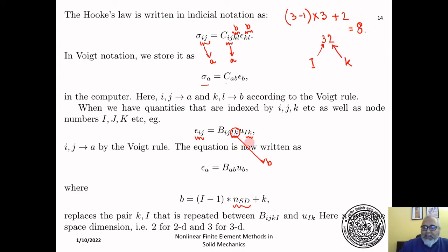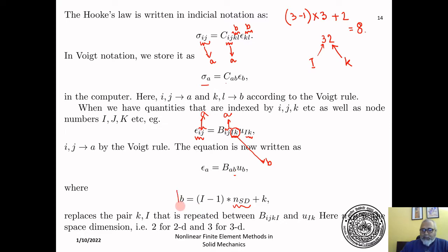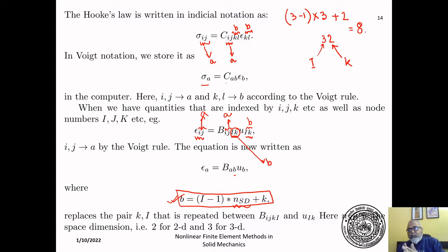So when capital I equals 3 and small k equals 2, you store it in the 8th location. The index i-j maps to a, the index I-k maps to b using this formula, and u_{Ik} also maps to the same b. This works only when the number of degrees of freedom per node equals the dimension of the problem: three displacements for 3D, two for 2D, one for 1D.